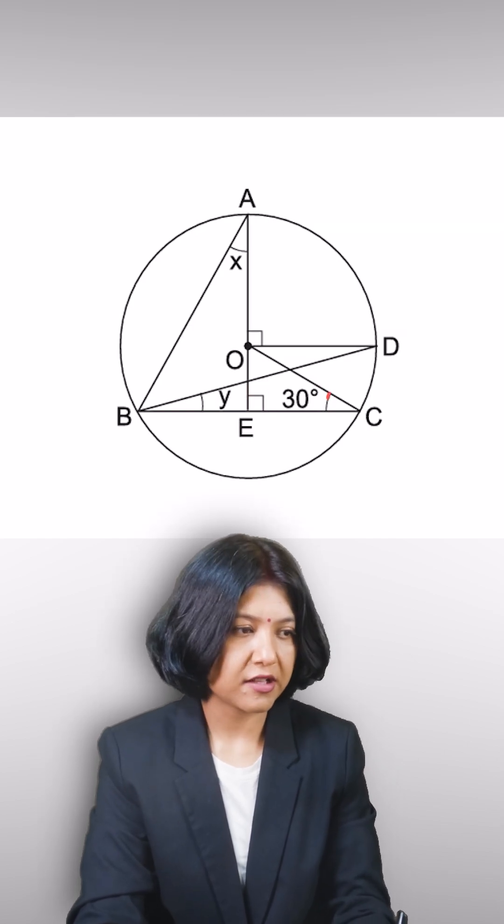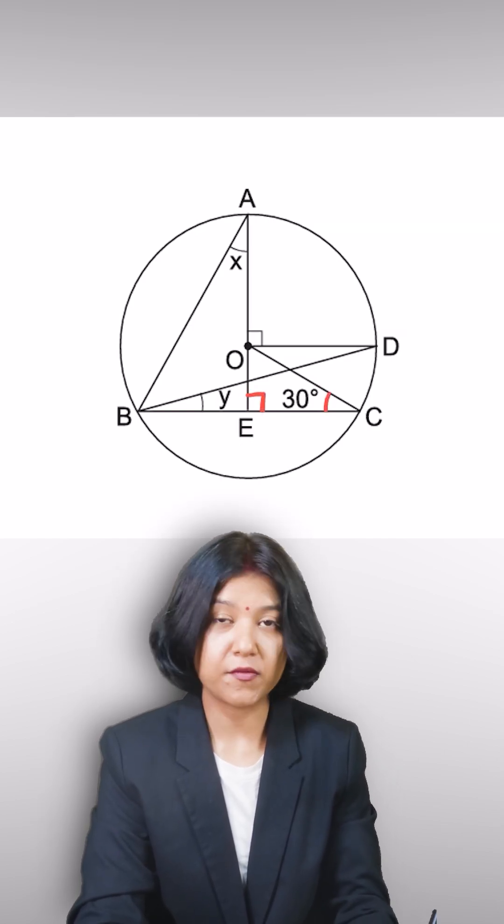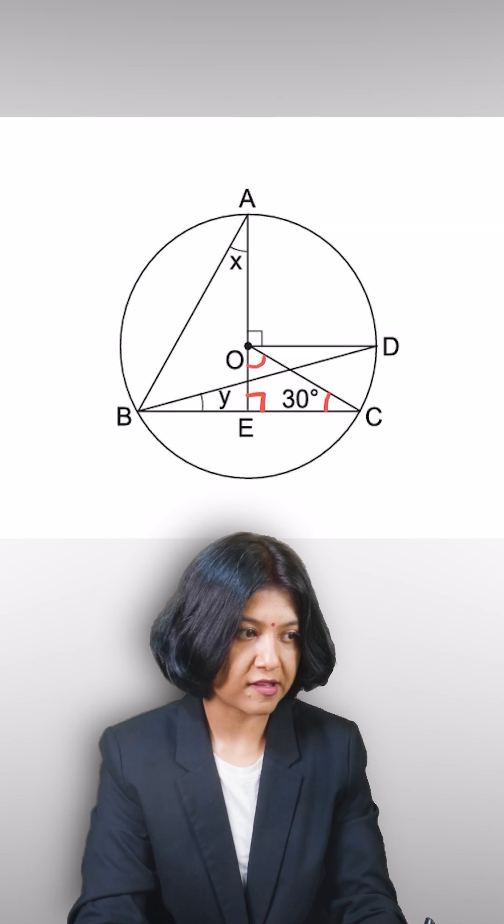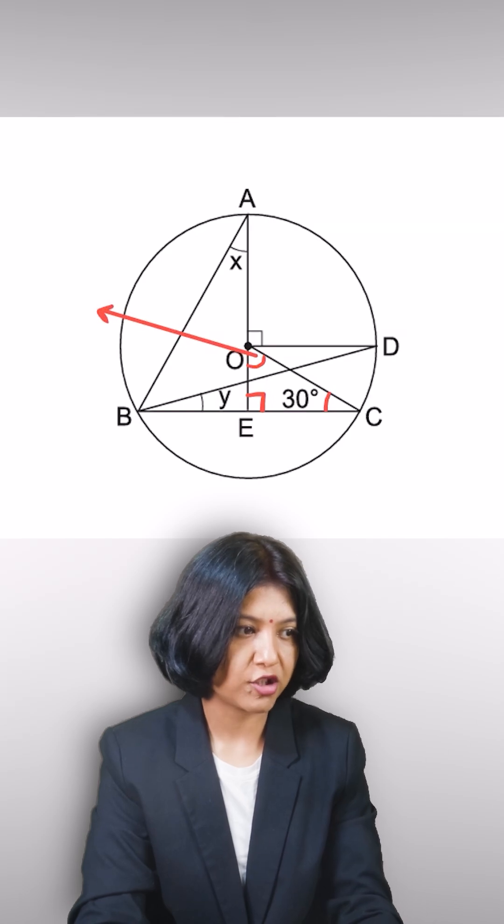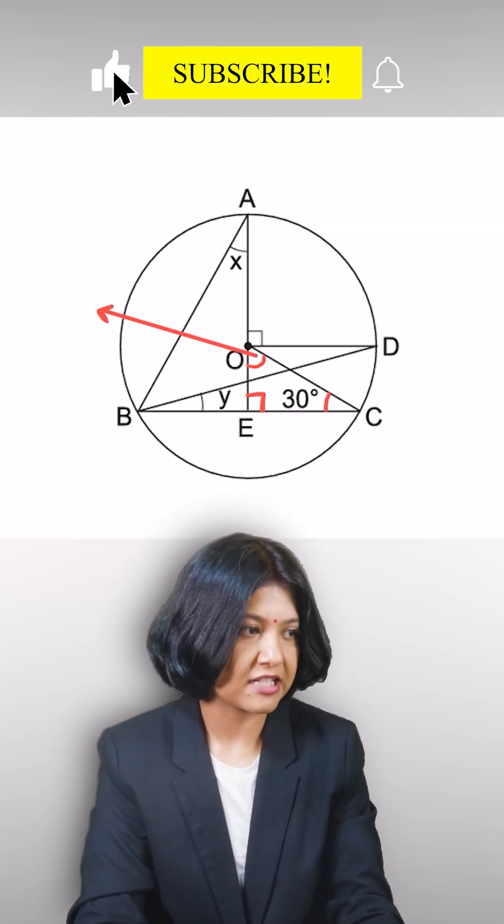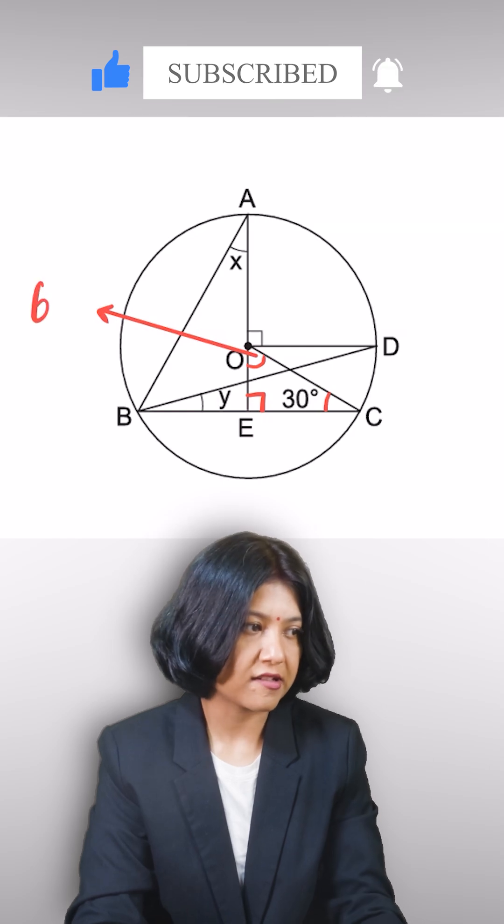You have been given two angles, 30 degrees and 90 degrees. You can always find the third one. The third one is simply 180 minus the sum of the two. So this has to be 180 minus 90, which is 90 minus 30, 60.